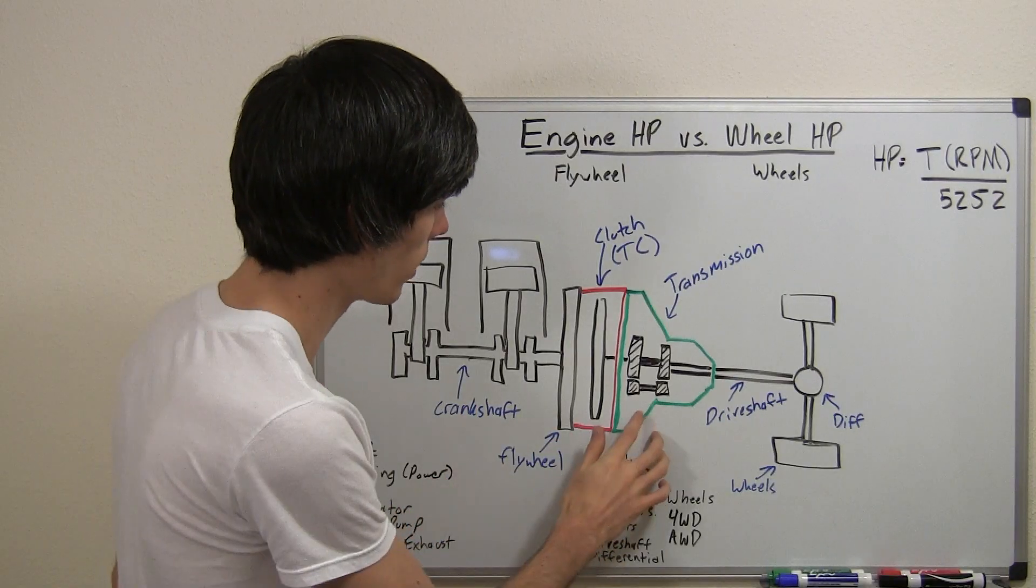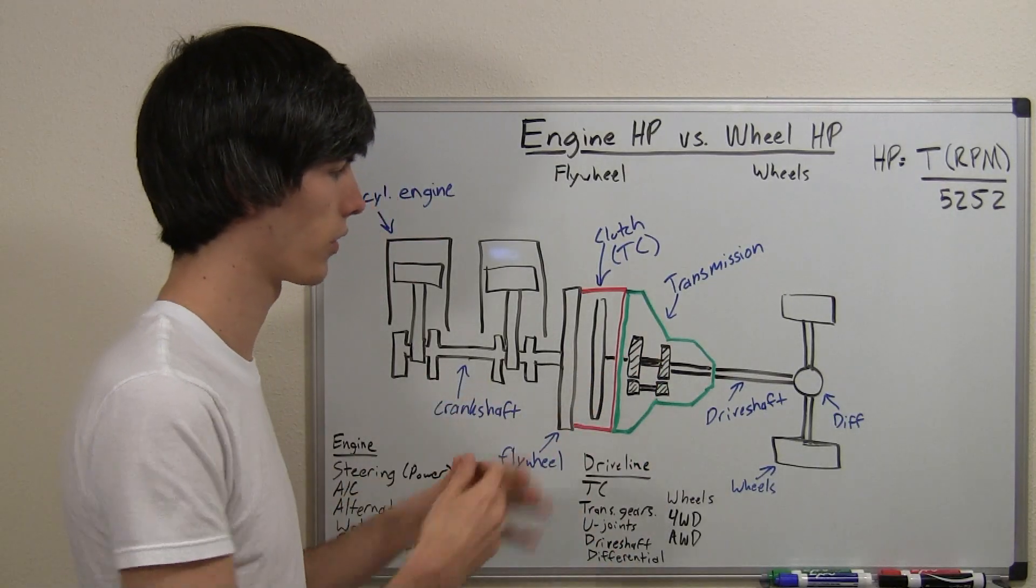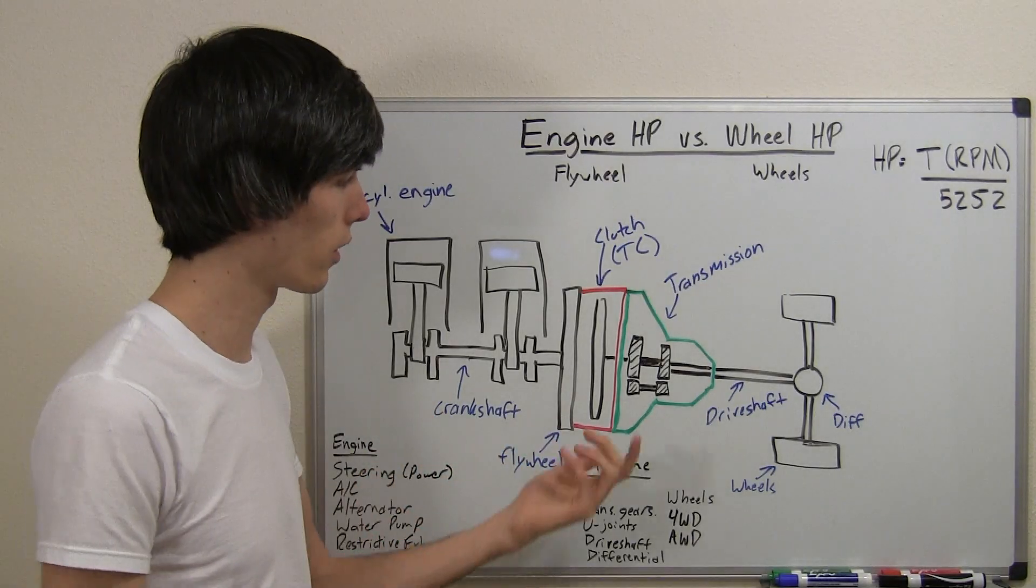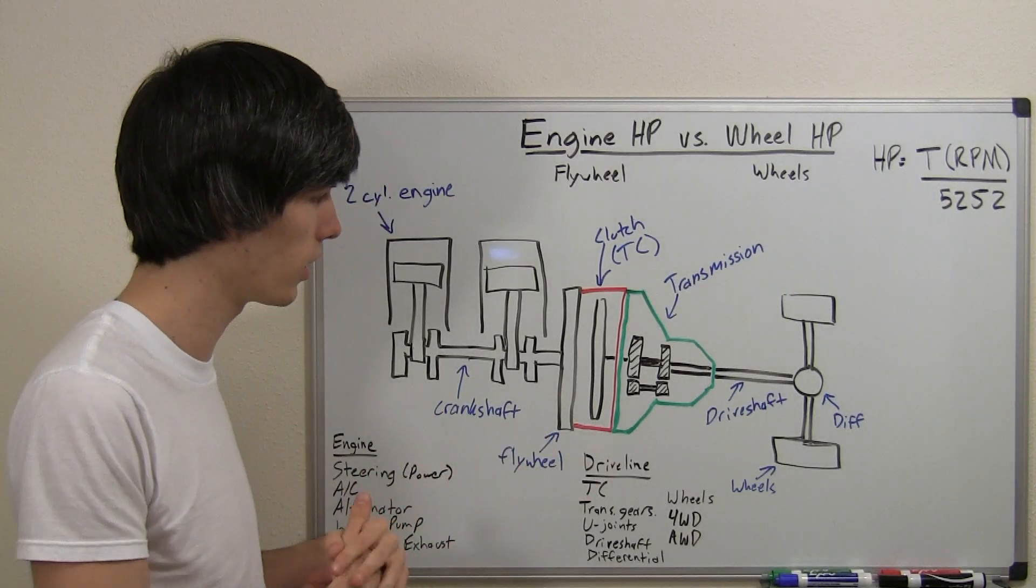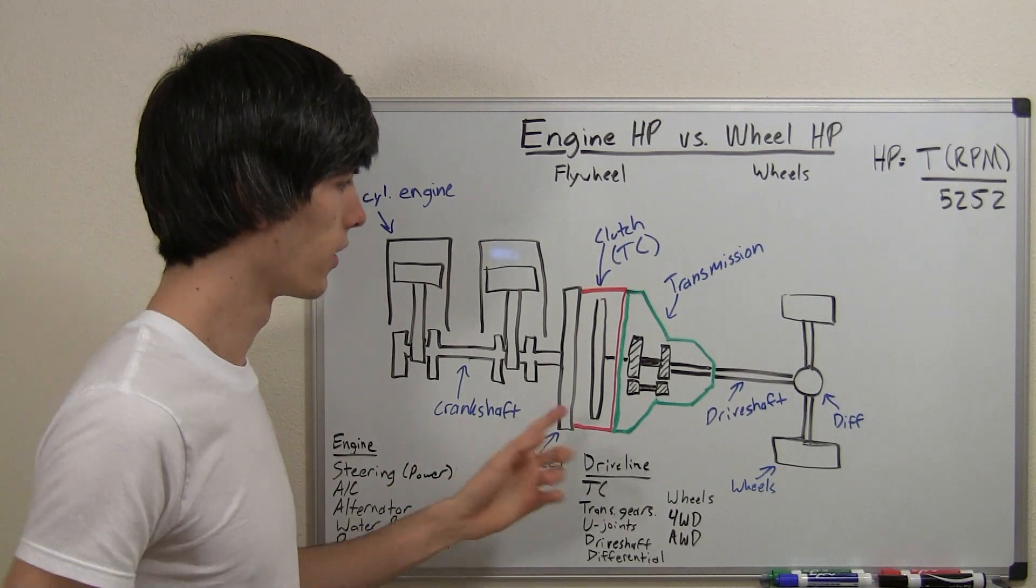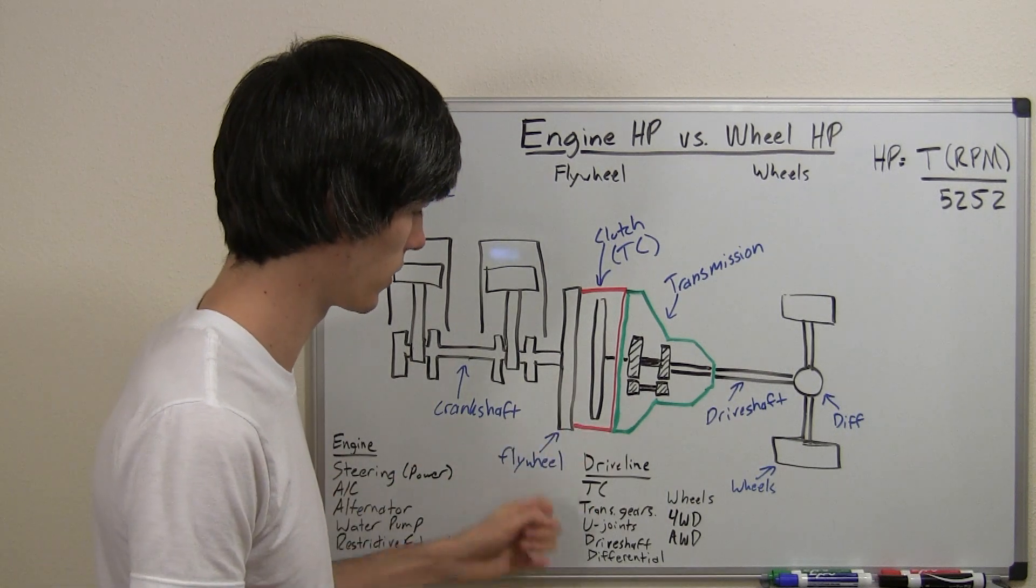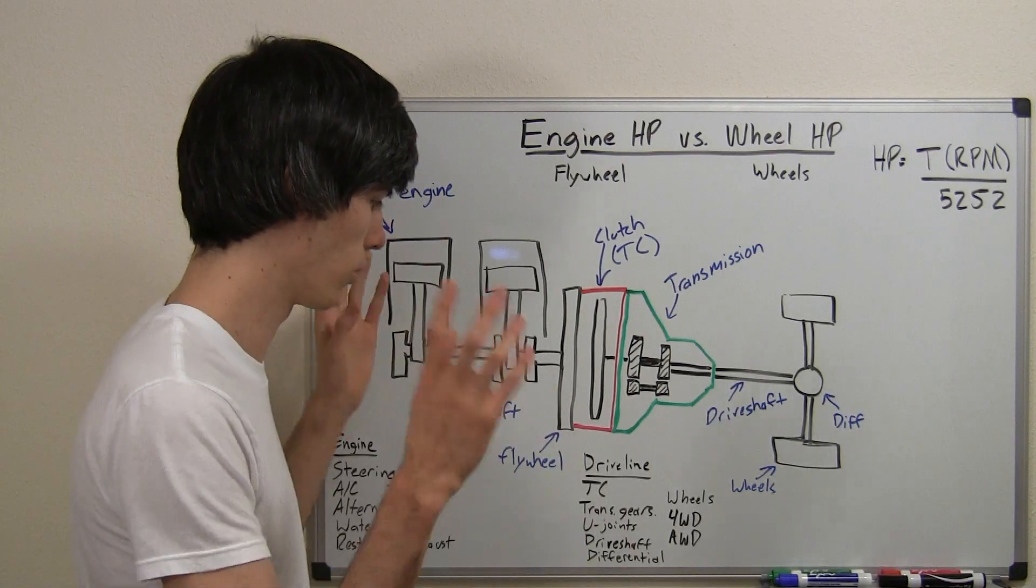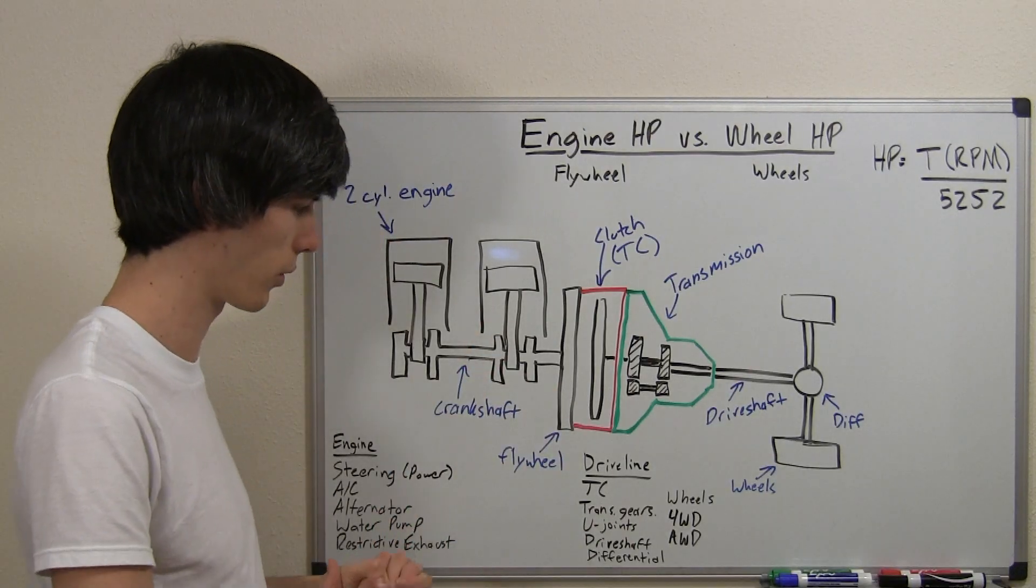Next up, we've got our transmission. Within that, you've got gears that are all spinning, and for those gears to spin, obviously you need friction, and that friction creates heat, and so that heat is lost energy. Once again, more energy lost from our quoted 200 horsepower, or whatever the manufacturer is claiming.